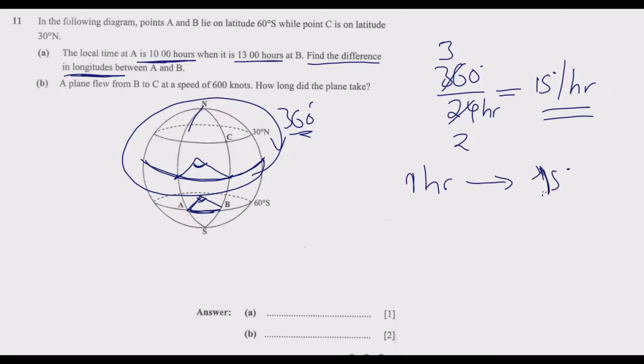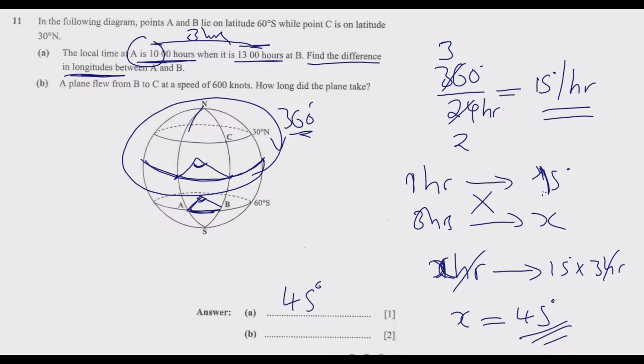What's the time difference between town A and town B? It's 13 hours minus 10 hours, which is 3 hours. So 3 hours equals how many degrees? We cross multiply: x times 1 hour equals 3 hours times 15°. The hours cancel, so x equals 45°. So 45° is the difference in longitudes between A and B.